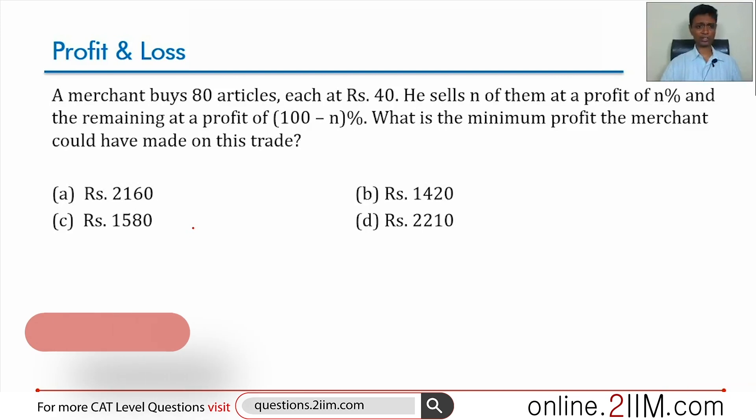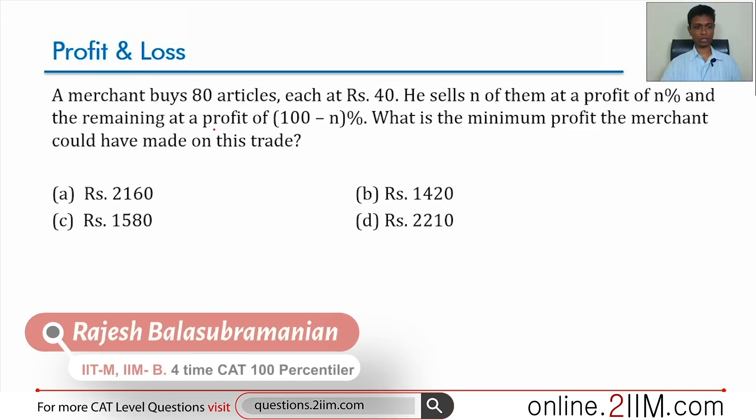This is a wonderful question, slightly unconventional on profit and loss. Let's read this: A merchant buys 80 articles, each at rupees 40. The cost price is 80 into 40.